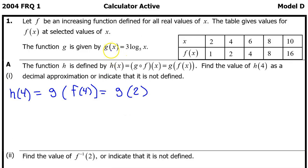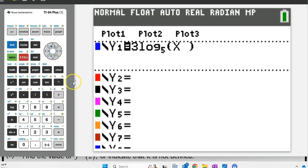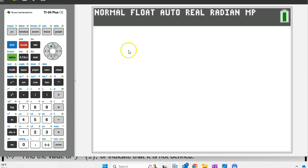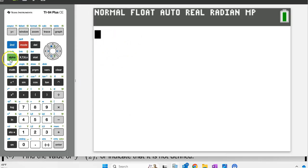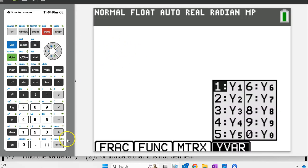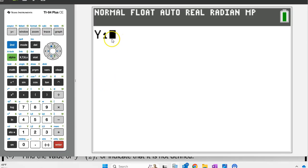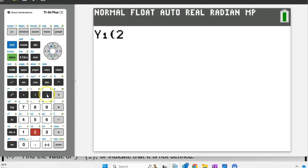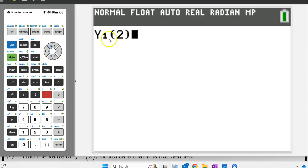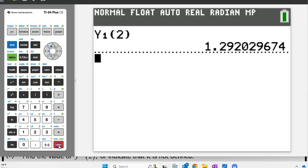Since we entered g of x as y1, evaluating g at 2 means evaluating y1 at 2. Quit to a blank screen by hitting 2nd quit. You can make y1 appear by hitting alpha, trace, enter. And you can evaluate y1 at 2 by putting 2 in parentheses right next to y1 and hitting enter.